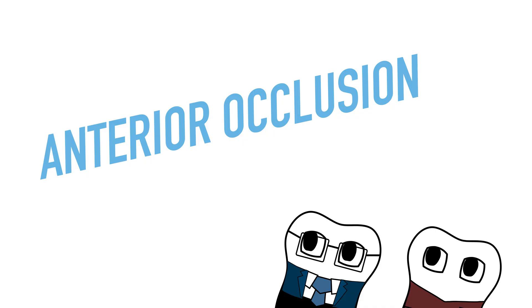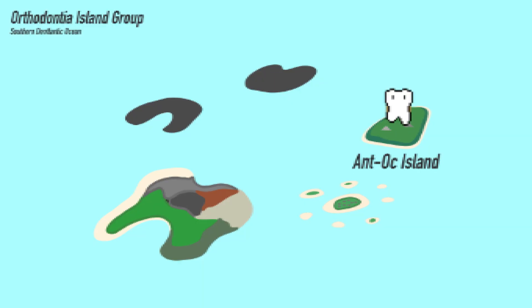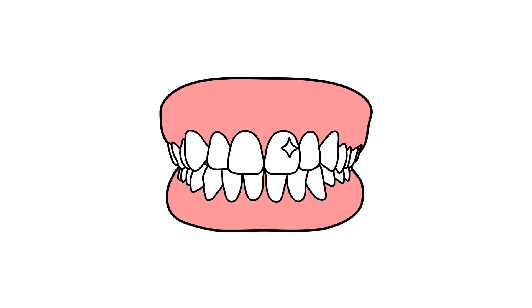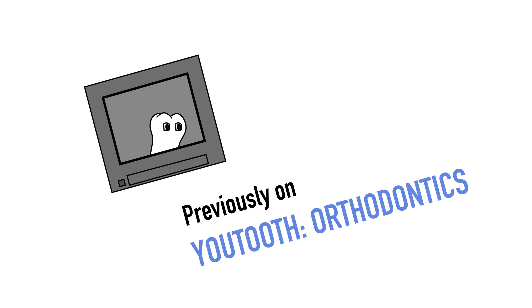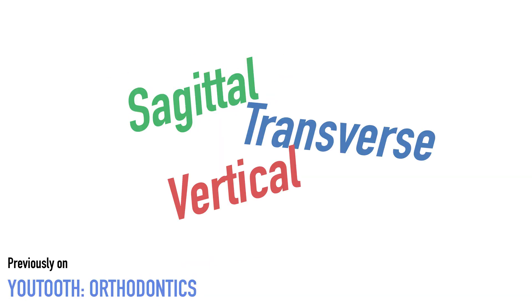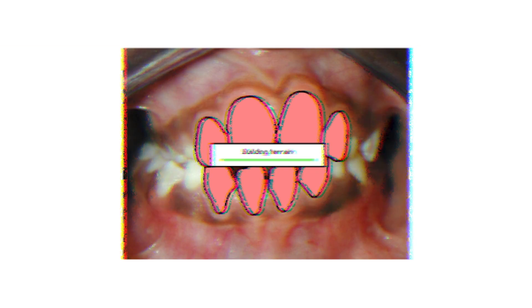Next in the process we're going to be talking about anterior occlusion. When it comes to anterior occlusion, I want you to think about the incisors — it's all about the incisors. There are three planes of space and everything that we examine we look at separately in three planes of space. The first plane of space is the vertical, so we have the upper incisor and the lower incisor — let's say there's no overlap.